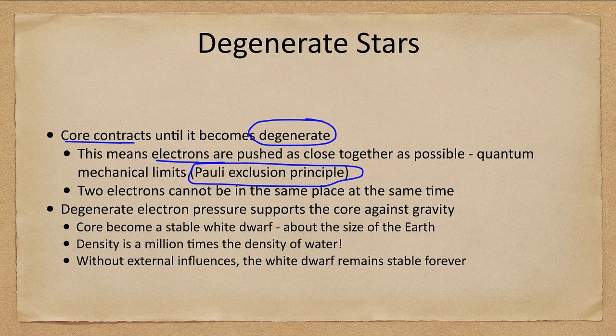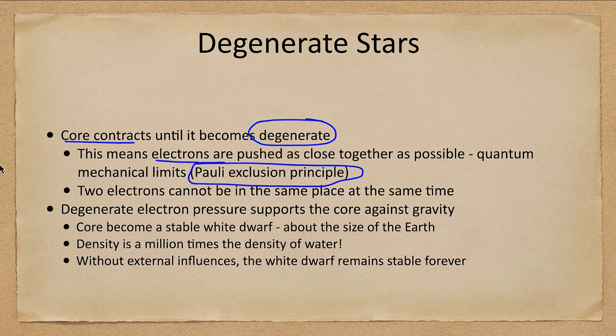Remember that a star is being pulled down by gravity — everything wants to be pulled down to a point. There's always something holding us up against that. For Earth, it's just the structure of the Earth, the material pushing against each other strongly enough to hold up against gravity. For the Sun, it was the pressure from nuclear reactions inside. But a degenerate star like a white dwarf will no longer have that possibility, and this electron degeneracy pressure can then support the core against gravity.